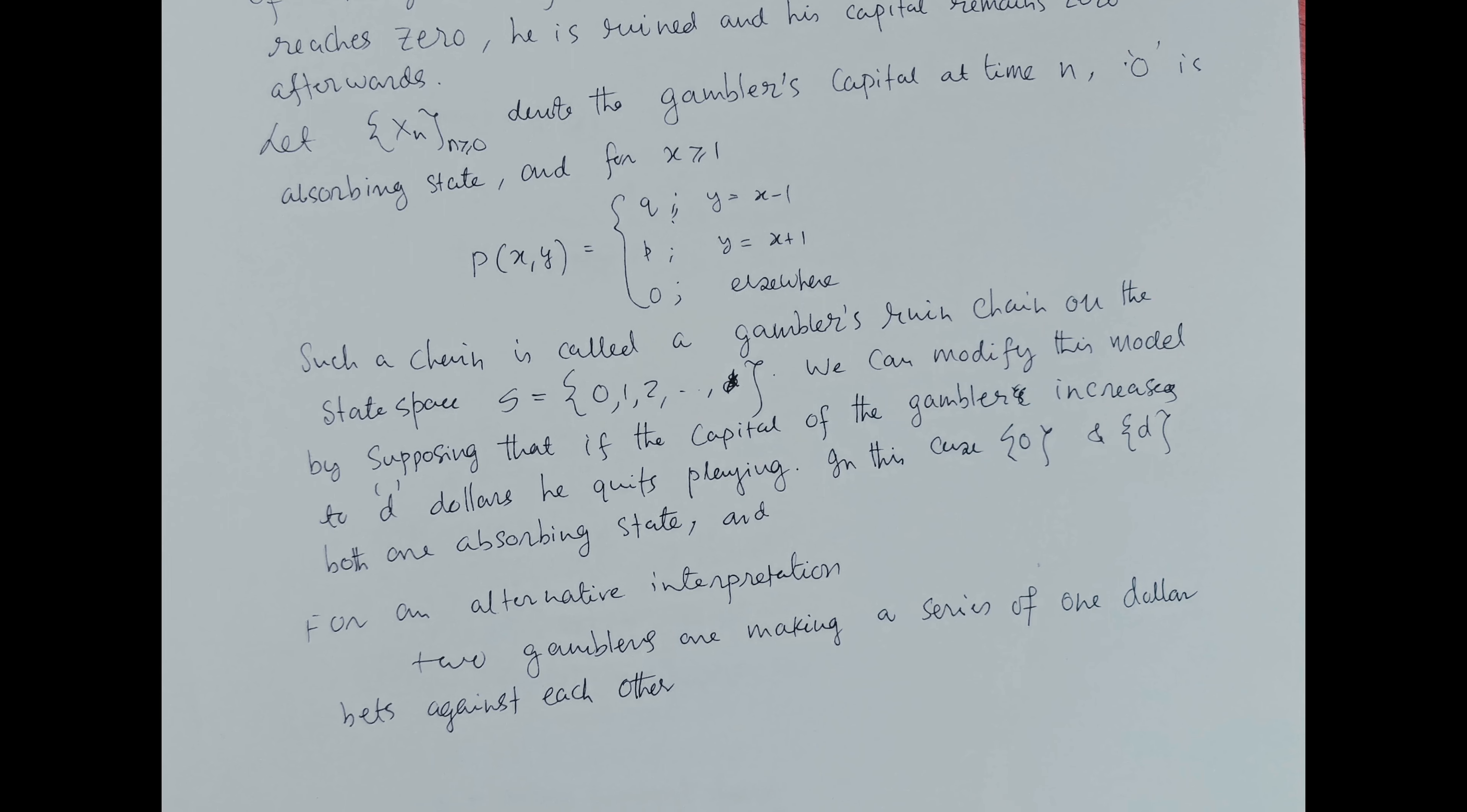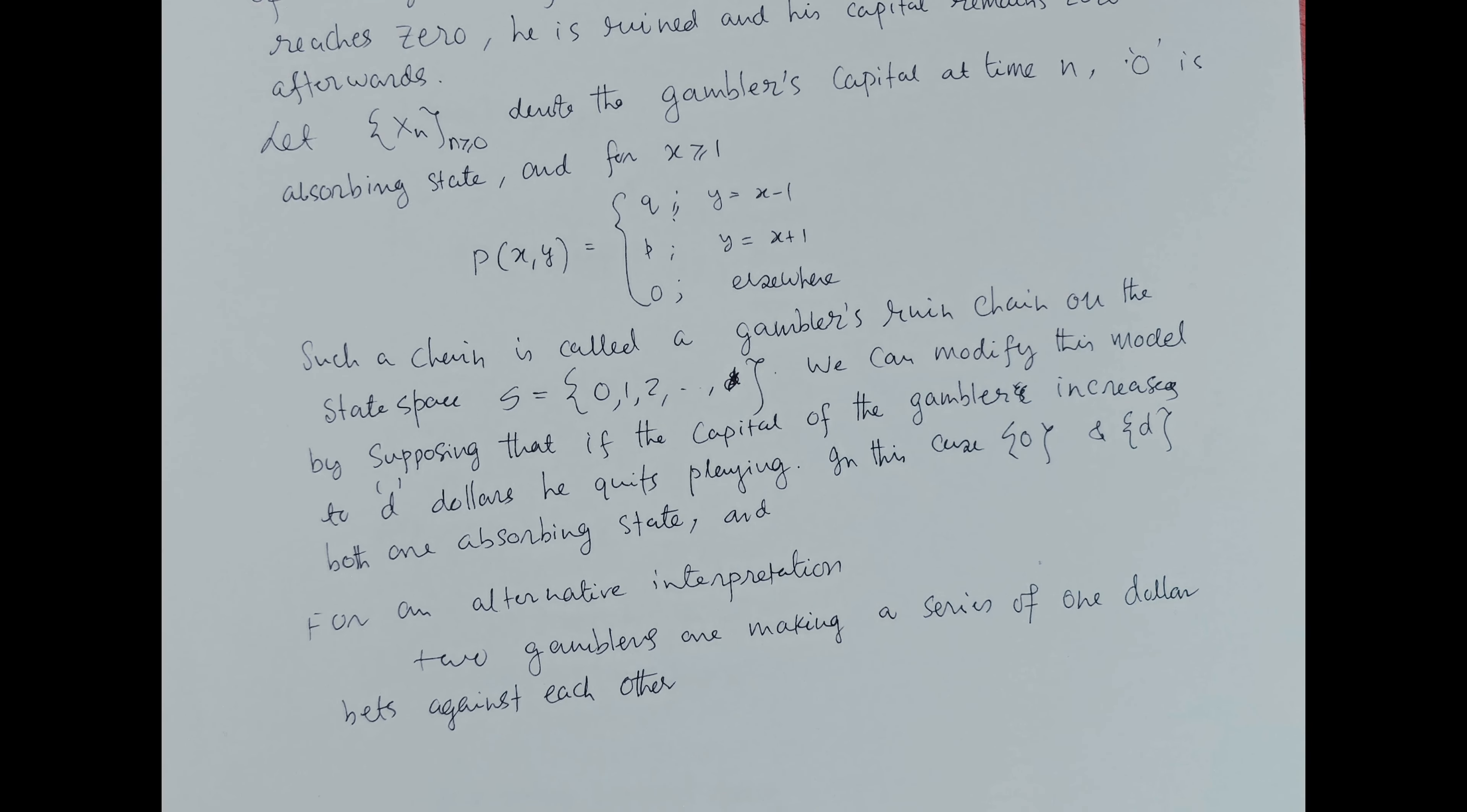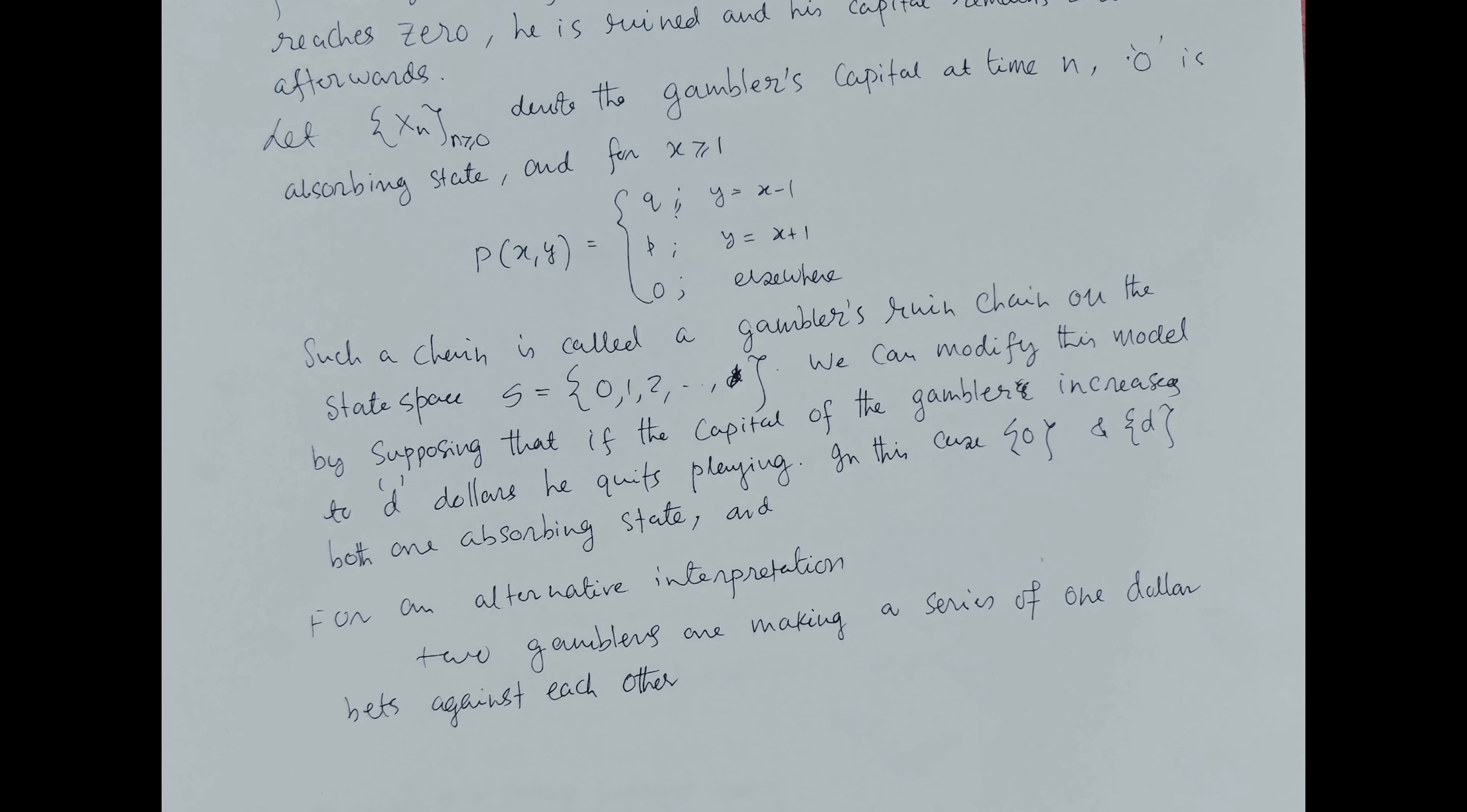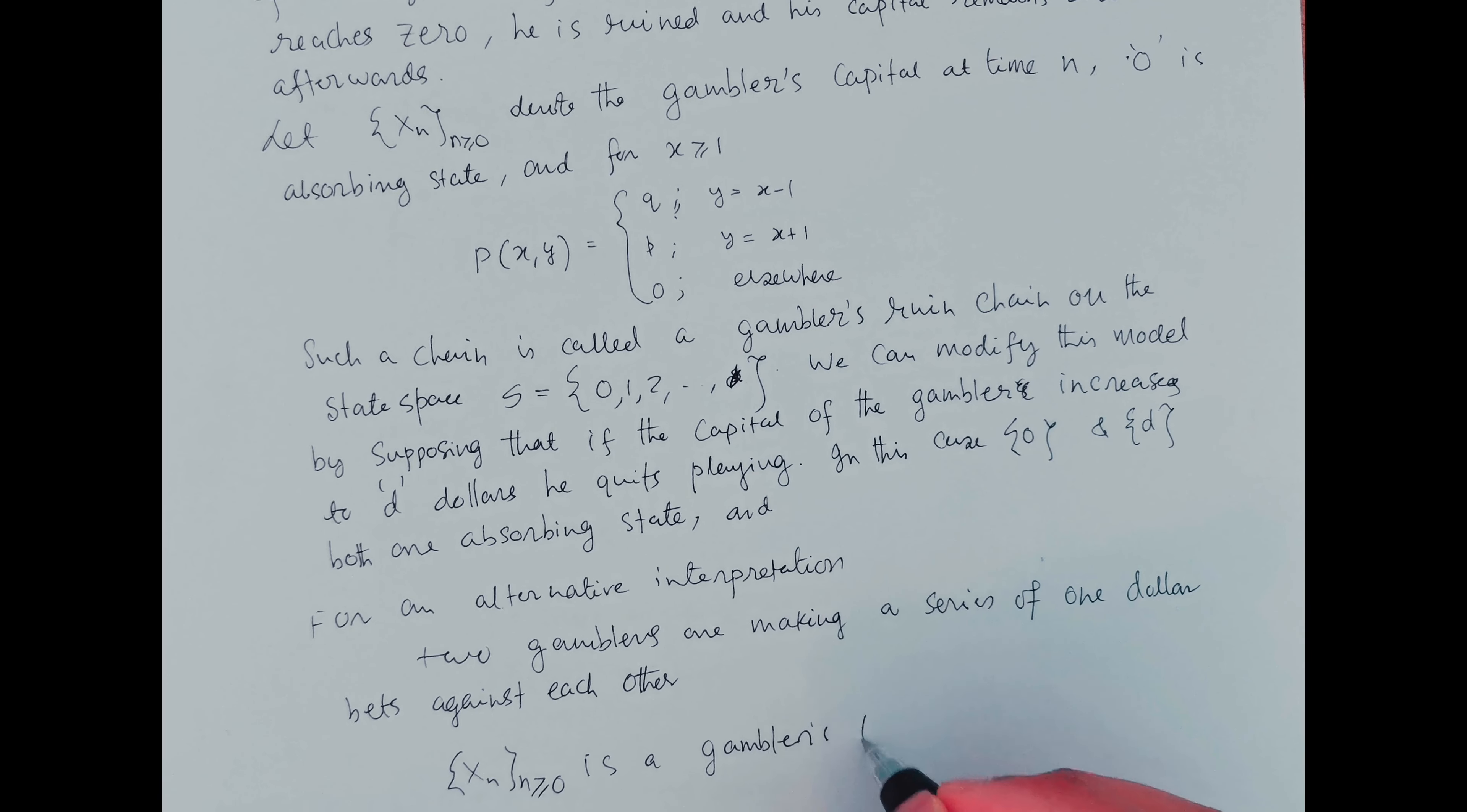The two gamblers play until one of them goes broke. Let x_n denote the capital of the first gambler at time n. Then x_n is a gambler's ruin chain.